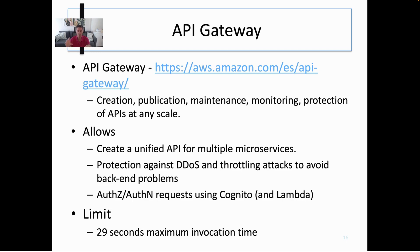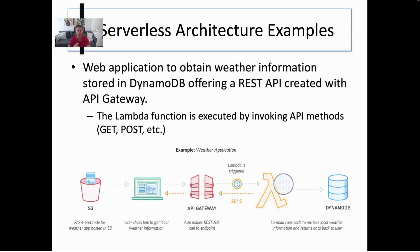Combining Lambda and API Gateway with a persistent database such as a DynamoDB table gives you a serverless architecture. For example, a web application to obtain weather information stores data in DynamoDB and offers a REST API created with API Gateway. The Lambda function executes whenever an API GET request is issued to API Gateway, queries DynamoDB to fetch the data, and produces a JSON response sent back through API Gateway to the client — which can run a front-end application using Vue.js or React with a graphical library to create statistics or histograms.